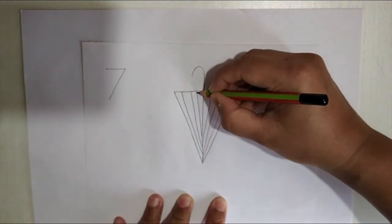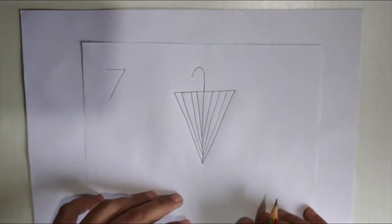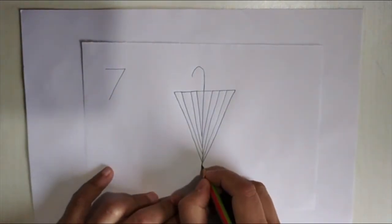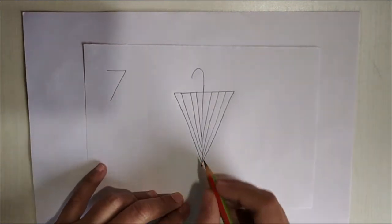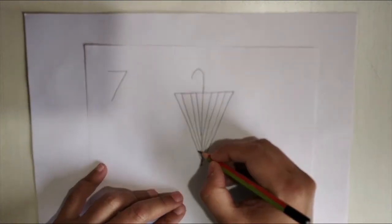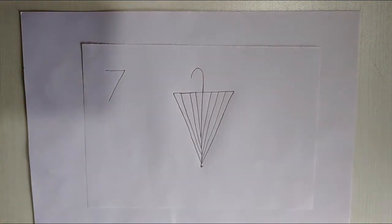Can you guess children? What does this look like? An umbrella. We use umbrella during rainy season.